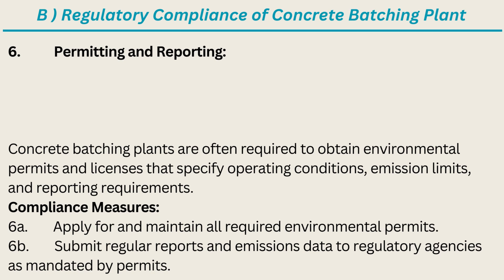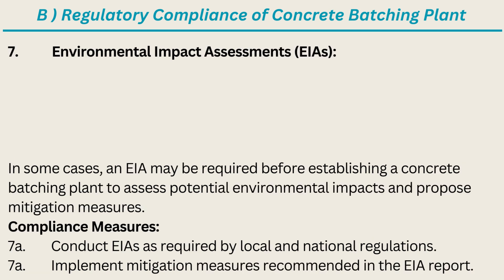6. Permitting and Reporting. Concrete batching plants are often required to obtain environmental permits and licenses that specify operating conditions, emission limits, and reporting requirements. Compliance Measures: A. Apply for and maintain all required environmental permits. B. Submit regular reports and emissions data to regulatory agencies as mandated by permits.